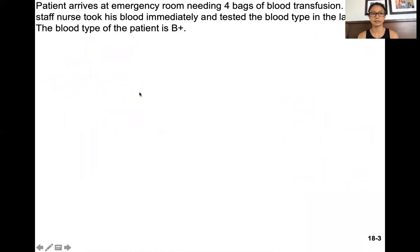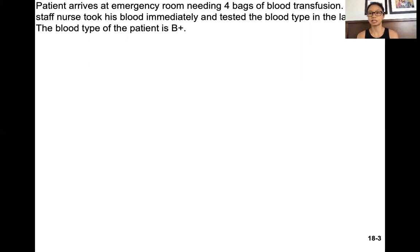Here's a typical problem that's given. A patient arrives at the emergency room needing four bags of blood — this patient may be from a car accident, gun violence, or other things like that, so they need a blood transfusion. A staff nurse took his blood immediately and tested the blood type in the lab. In the lab they looked for blood typing and saw agglutination in wells with anti-B and anti-RH. Therefore the blood type is B positive. After reading this question, you want to write that the patient's blood is B positive.